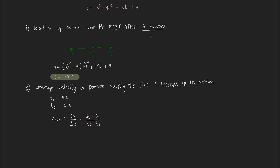We still have to solve for these values. At T₁ equals 0, S₁ is equal to 0³ minus 9 times 0² plus 15 times 0 plus 4, that would be 4 meters. And at T₂ equals 5 seconds, S₂ is equal to 5³ minus 9 times 5² plus 15 times 5 plus 4. Using our calculator, we get negative 21 meters.